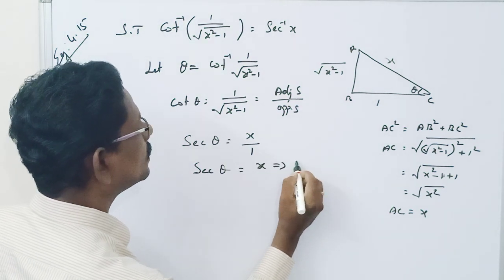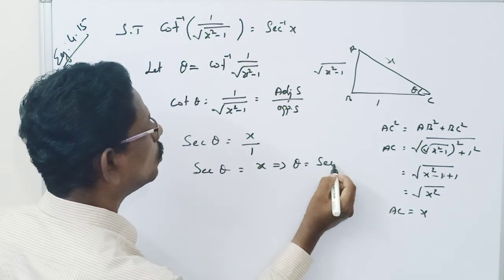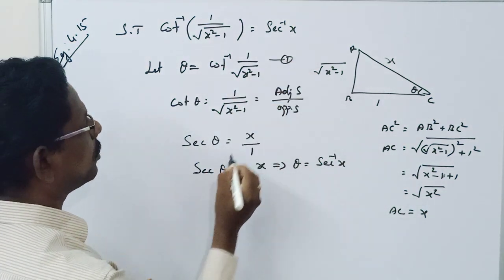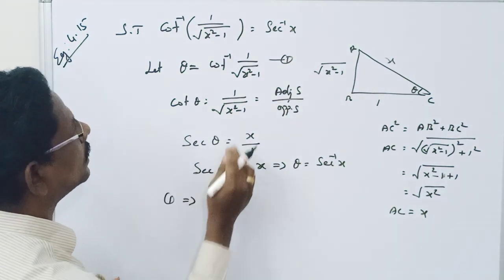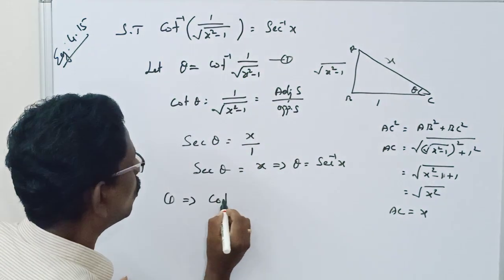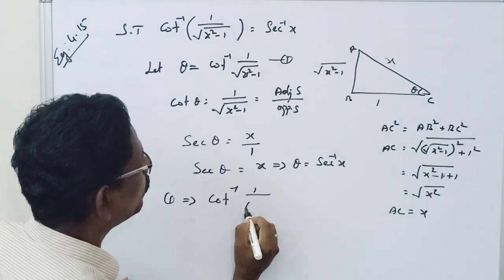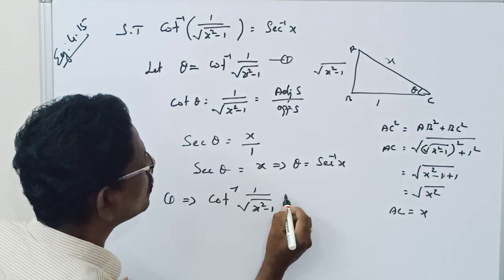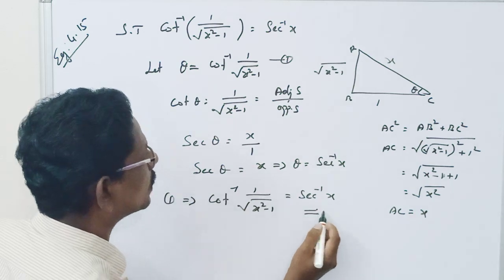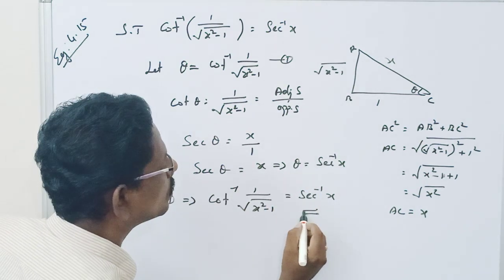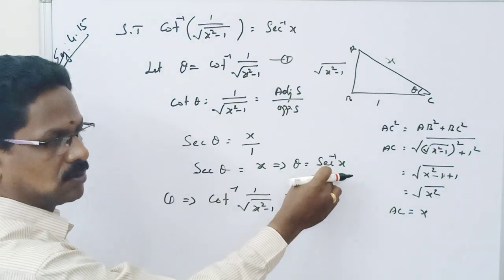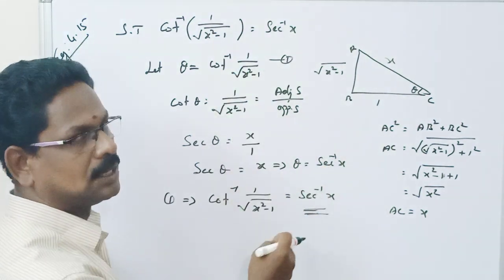This implies theta equals secant inverse of x. Taking this as equation number 1, equation 1 implies cot inverse of 1 by square root of x squared minus 1 equals secant inverse of x, because both sides equal theta. Therefore, it is verified.